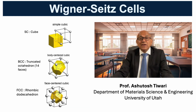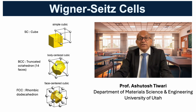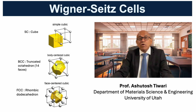Each crystal has a distinct Wigner-Seitz cell shape that directly reflects its symmetry. In a simple cubic structure, the cell is itself a cube, the most symmetric and intuitive form. For the body-centered cubic lattice, the shape becomes a truncated octahedron — 14 faces in all: 6 squares and 8 slightly irregular hexagons, filling space efficiently without voids.